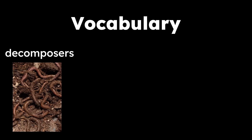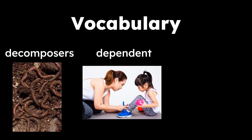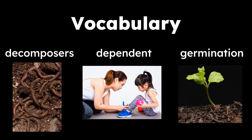Take a look at some vocabulary words in today's read aloud. The first word is decomposers: various life forms and organisms that help dead matter to break down and decay. The next word is dependent: requiring something or someone's support. And the last word is germination: the process in which a plant begins to grow or sprout.